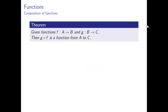We begin with the composition of two functions. For any functions f from A to B and g from B to C, the composite relation gf is a function from A to C. To prove this, we will show that for any element x in A, there is a unique element z in C such that the ordered pair (x, z) is an element of gf.